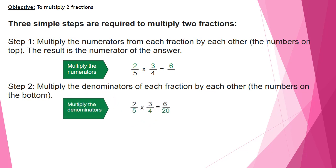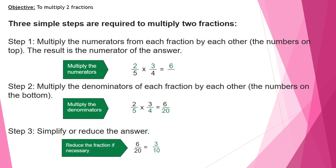But this is not the final answer because I have to go to the third step, which is to simplify and reduce the answer. If the answer is an improper fraction, I have to make it a mixed number. In all cases, if it's a proper or improper fraction, I have to check if I can reduce it or simplify it by dividing the numerator and denominator by the same number. Here both the 6 and the 20 are divisible by 2. So the final answer of 2 over 5 times 3 over 4 is 3 over 10.